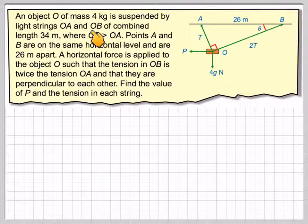An object O of mass 4 kg, so its weight will be 4g Newtons, is suspended by light strings OA and OB of combined length 34 m, where OB is greater than the length of OA.